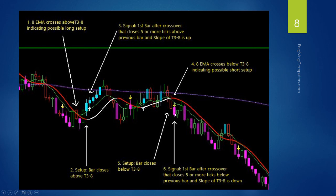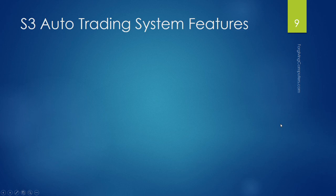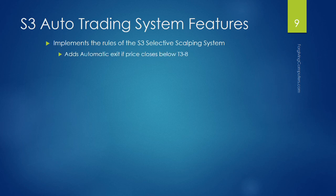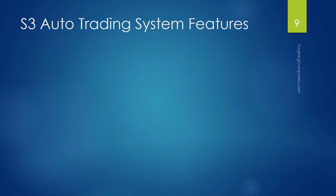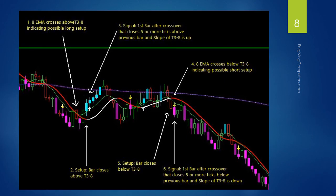The auto trading system that is available implements the rules of the S3 selective scalping system. It adds an automatic exit if the price closes below the T3-8. For example, if we entered a trade and the price closed below the T3-8, it would exit automatically if needed.